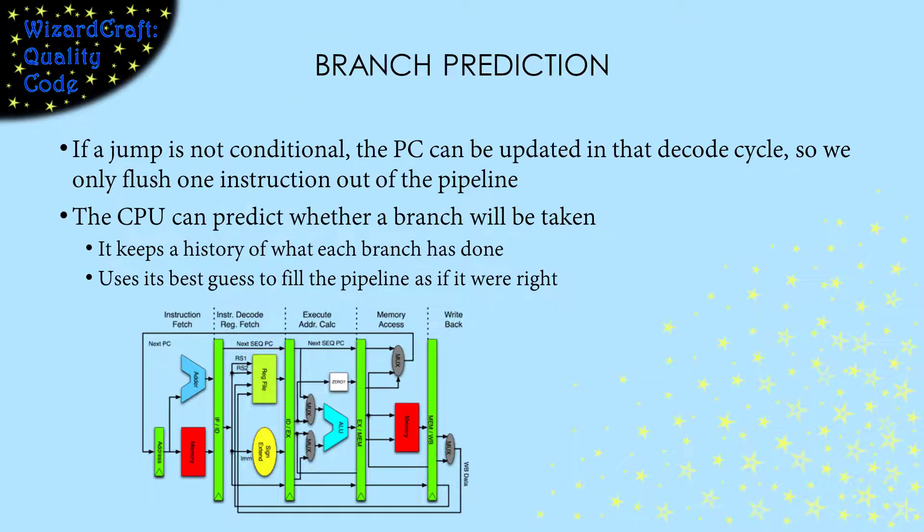Since flushing the pipeline is so expensive, CPUs are designed to try to help make that not happen. The first thing they do is to change the behavior for unconditional jumps. These are jumps that we always take. Essentially, they add another path here that has another multiplexer to feed forward the address from a plain jump instruction back to the PC. That lets us only flush one phase instead of all four.